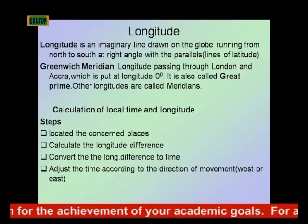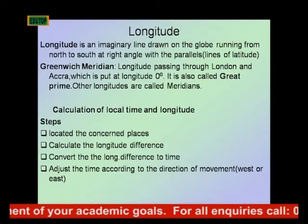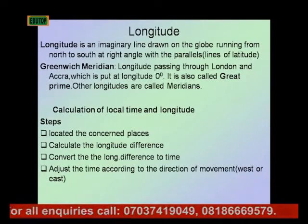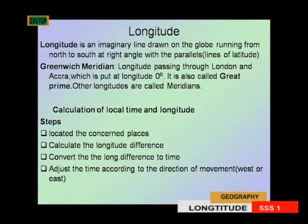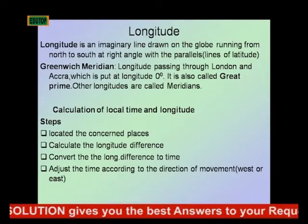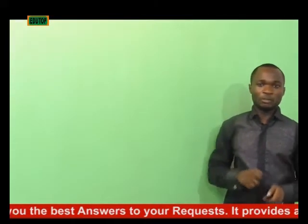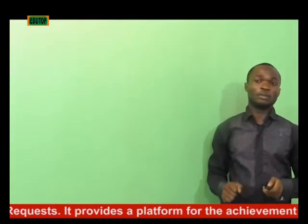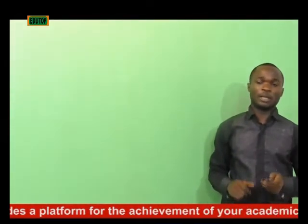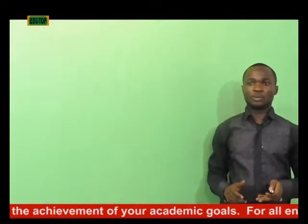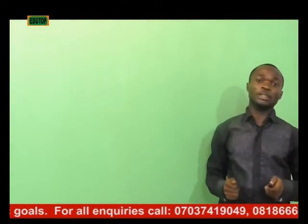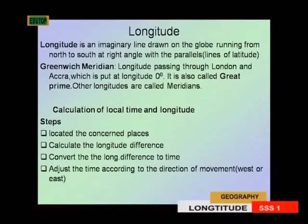The Greenwich Meridian is a longitude which passes through London and Accra in Ghana, placed at longitude zero degrees. We can say the Greenwich Meridian plays a similar role to the equator — while the Greenwich Meridian is for longitude, the equator is for latitude. It has zero degrees longitude, just as the equator has zero degrees latitude. It is also called the Prime Meridian.